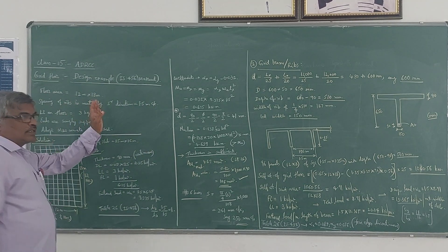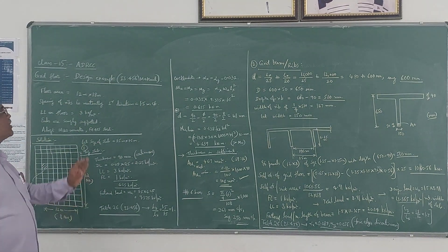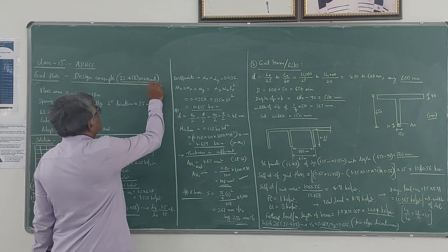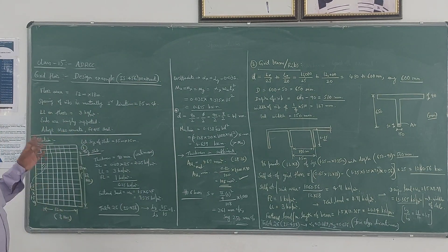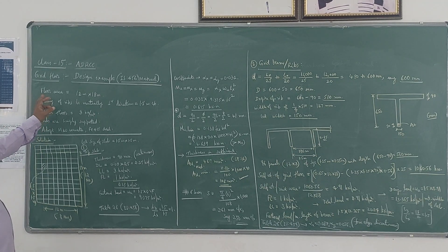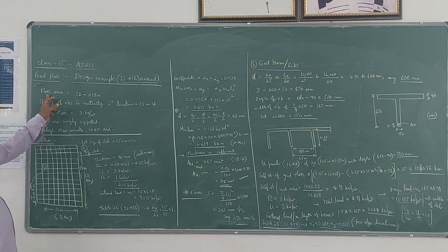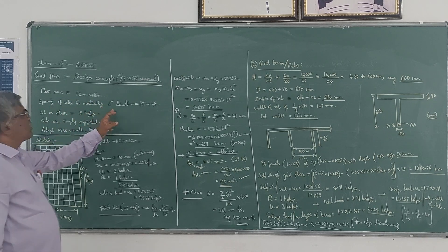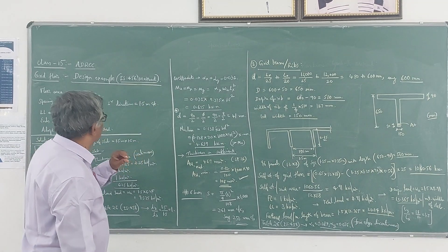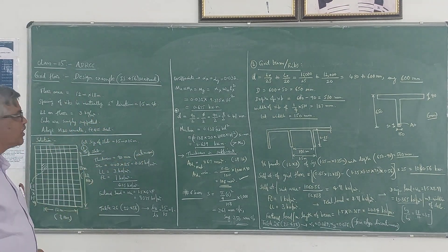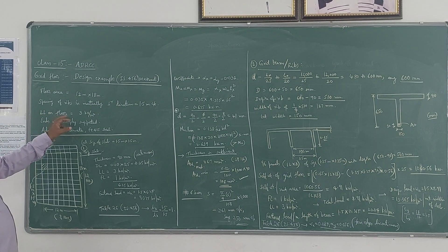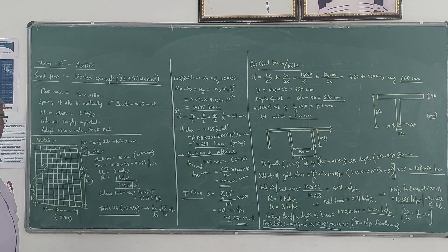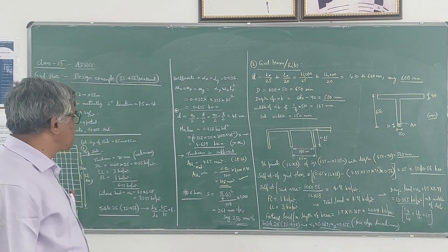In this class we will discuss an example of design of grid floor using the IS 456 method. The given data: the grid floor covers a floor area of 12 meters by 18 meters. Spacing of grids in both perpendicular directions is 1.5 meter centre to centre. Live load on the floor is 3 kN/m². Ends are simply supported and we use M20 concrete and Fe 415 steel.